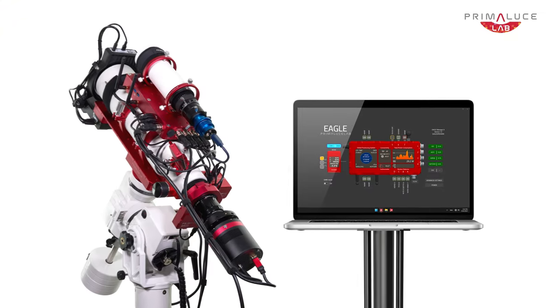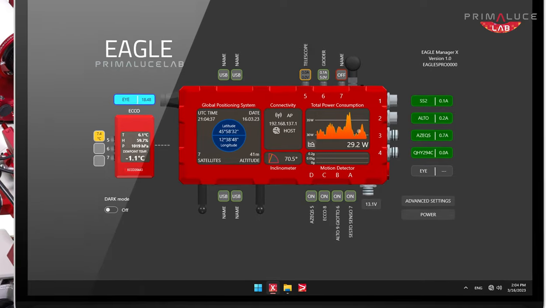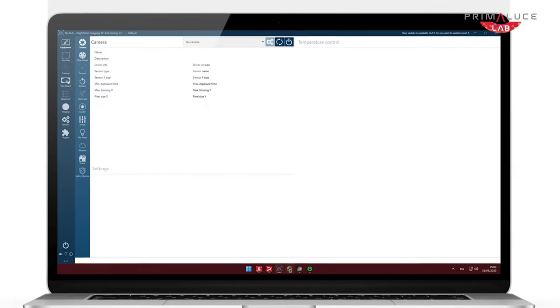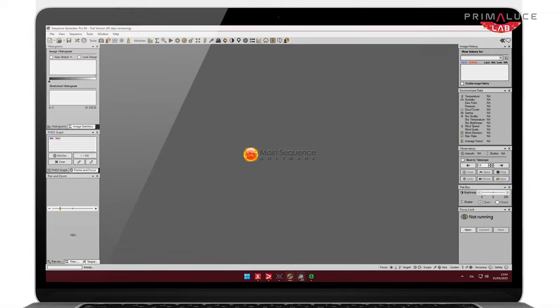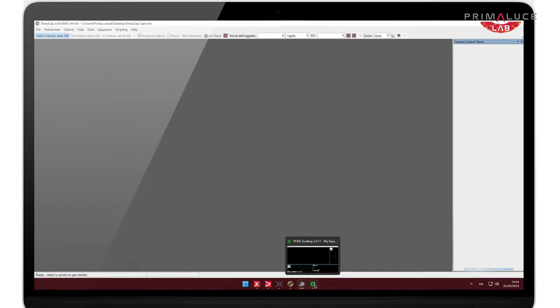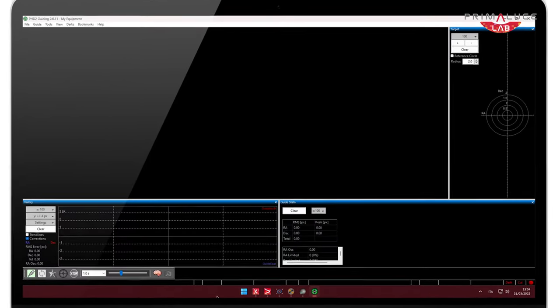The Eagle comes pre-installed with different astrophotography software, but you are free to install the one you prefer, like Sequence Generator Pro, Nina, TheSkyX, Voyager, Astrophotography Tools and many more.